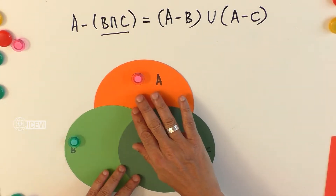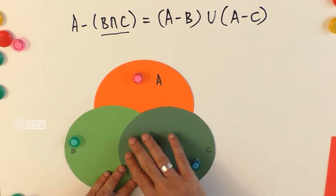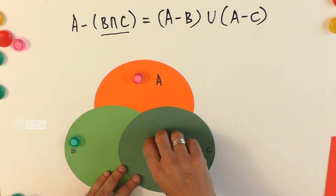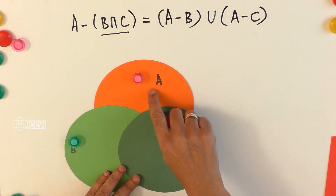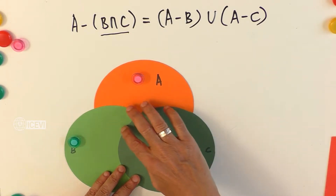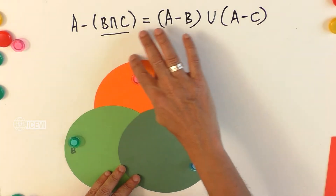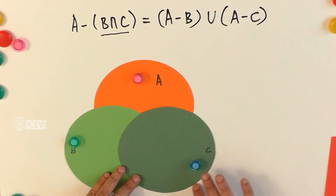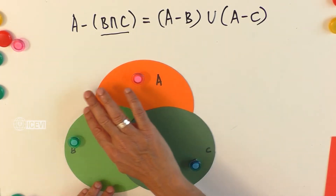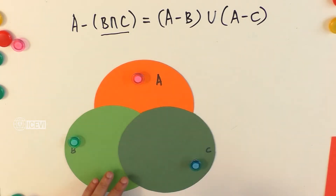We have placed three circles here — overlapping sets. A set, B set, and C set; they are overlapping. Let the child explore how these sets are overlapping into each other.